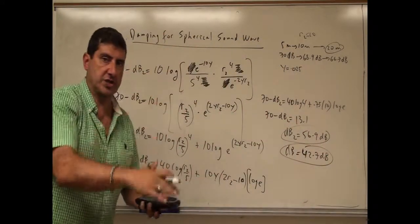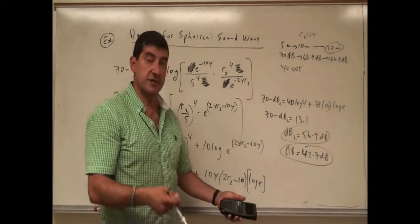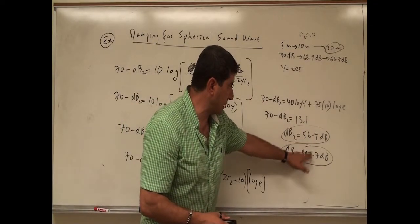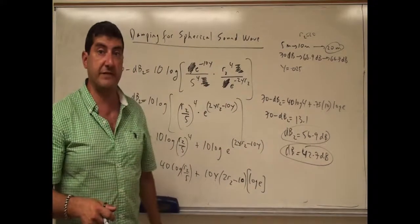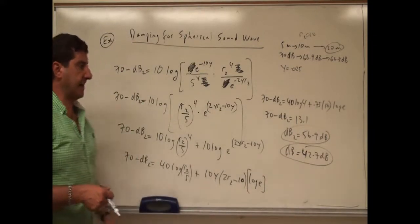So you see the decibel strength is decreasing quite a lot. It went from 70 to 56.9. That's a drop of 13 decibels. Then from here to here, that's another drop of, from 57 to 43, that's another about 15 decibels. So you're dropping very, very fast.